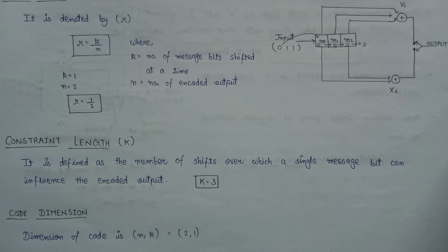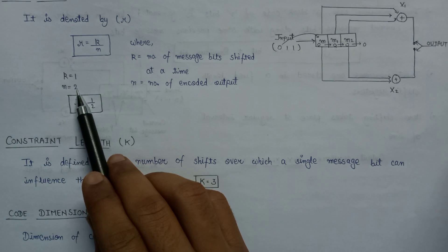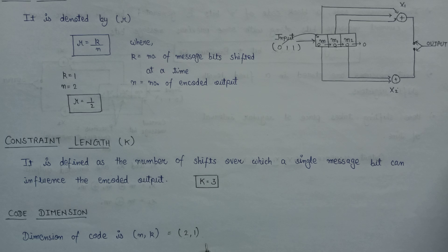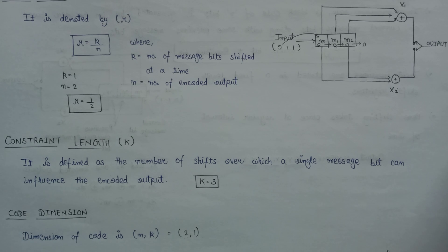Let's have a look at the code dimension. The dimension of the code is nothing but (n, k). Since n equals 2 and k equals 1, the dimension of code for this encoder is equal to (2, 1). This is how we can design the encoder. If you like my content then do subscribe to my channel and please hit the like button. Thank you.